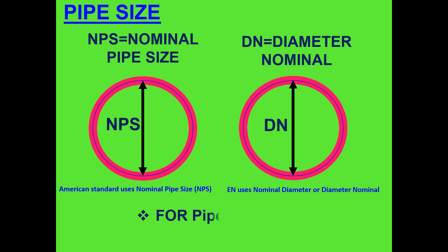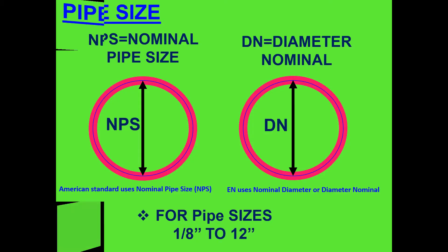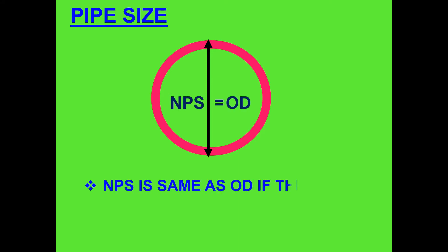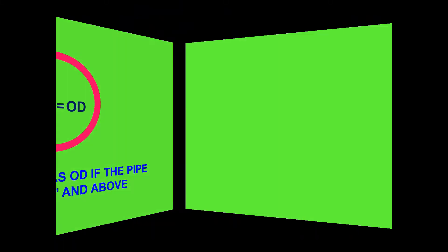Important point to take note: here you can see some difference in nominal pipe size. NPS is the same as OD, which means nominal pipe size is the same as outer diameter, if the pipe size is from 14 inches and above.